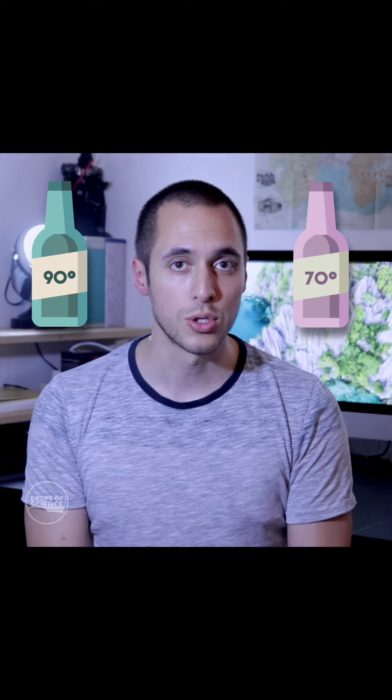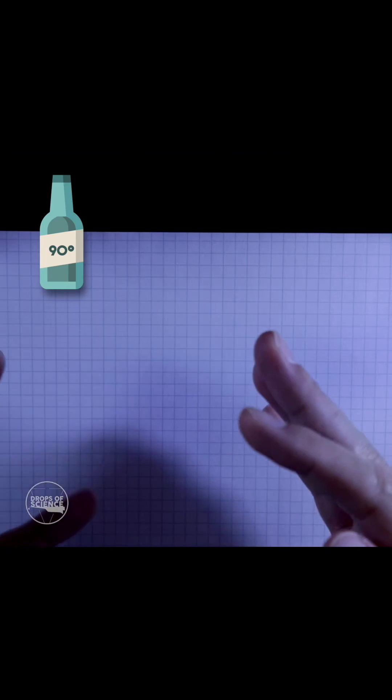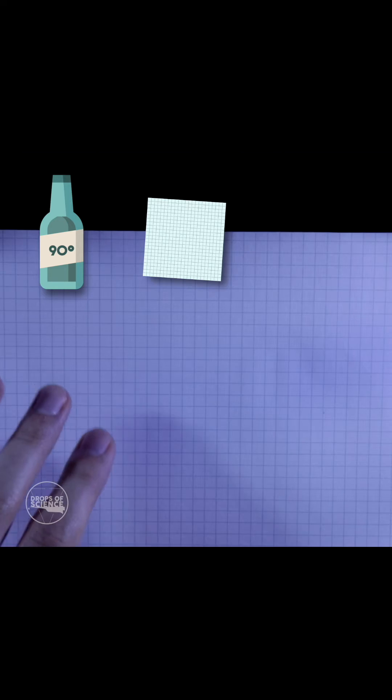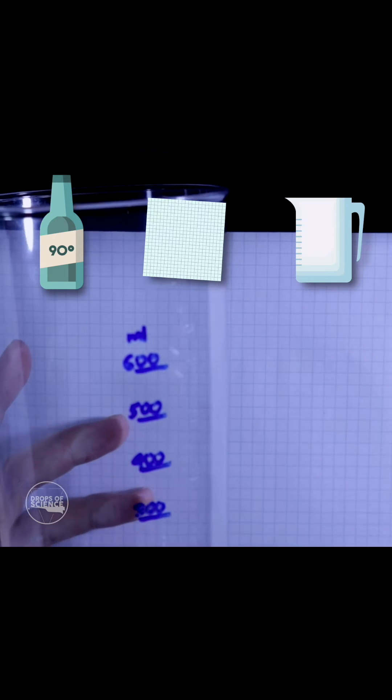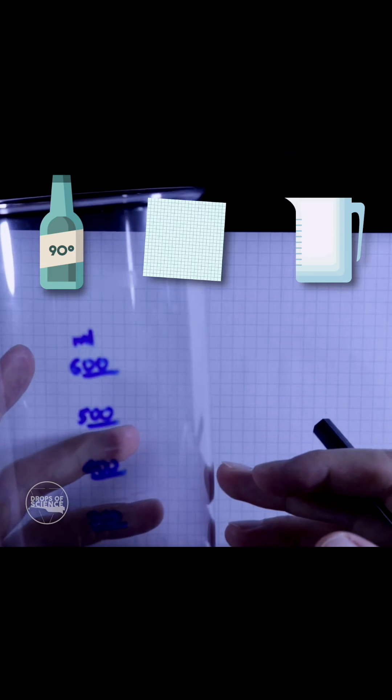So all you need is of course the alcohol you bought at the supermarket, then a piece of paper to write down a simple formula which we will do together, and finally a beaker jar or anything else that you can use to measure how much alcohol and water you need to take.